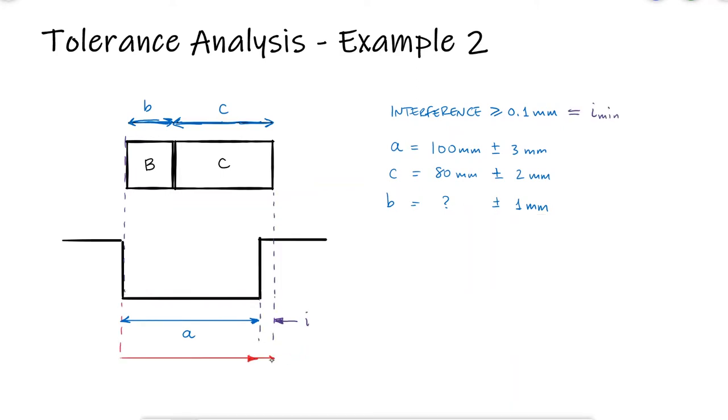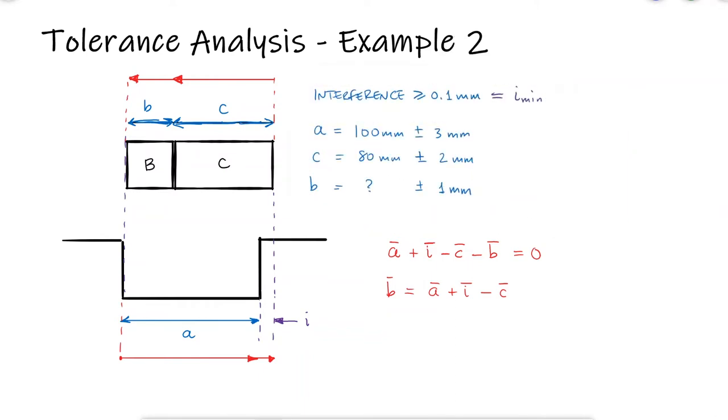The tolerance loop or tolerance stack-up analysis shows us one more time that the nominal value for B depends on the nominal value for the interference. Just like in the previous example, the minimum value for the interference, or clearance in that case, is equal to its nominal value minus its tolerance, and we already know that the tolerance of the gaps, or intersections in this case, is equal to the sum of the tolerances of the other dimensions.